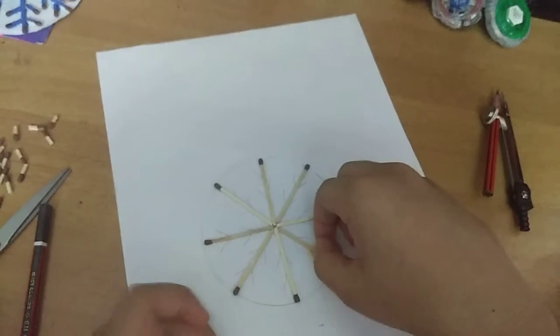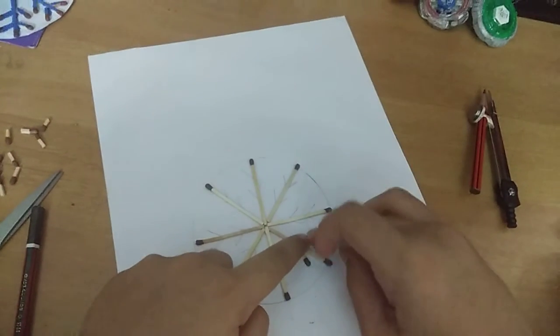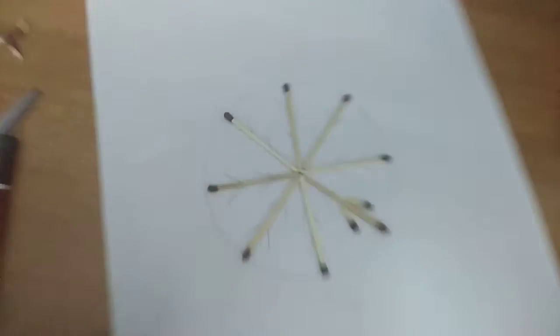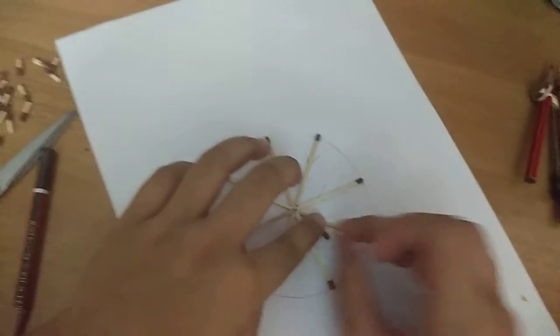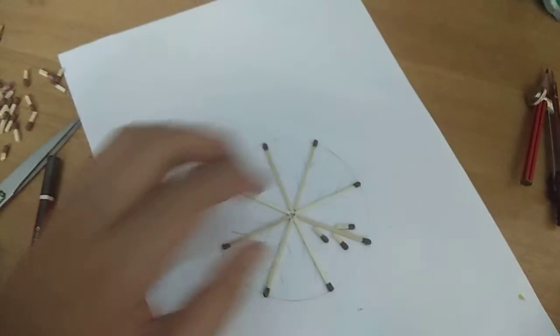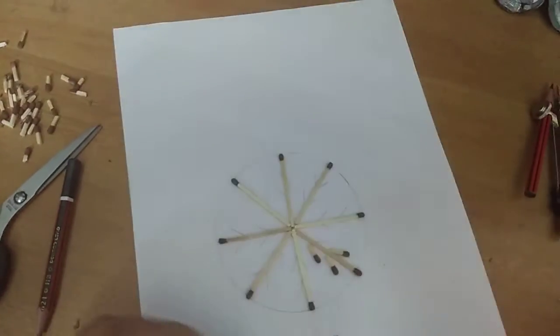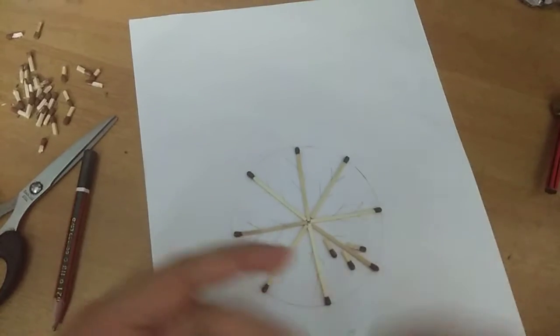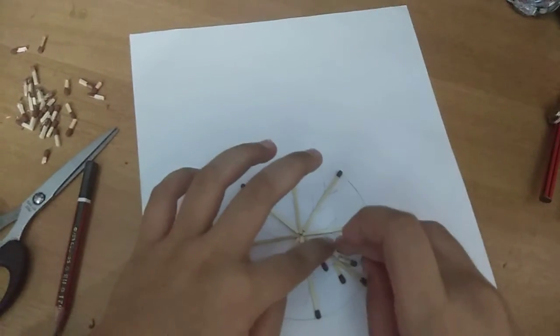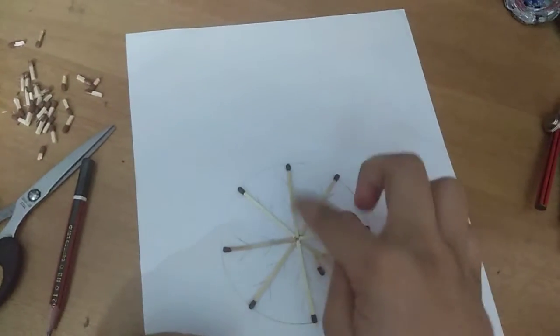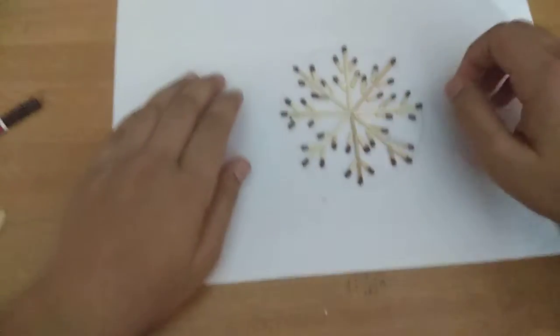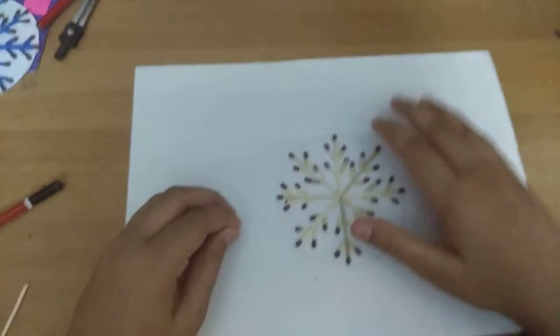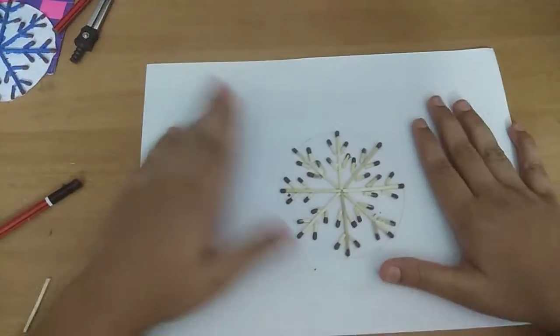Glue this and over here and one more. So now you need to do this all on the six sides. So now I have stuck all the matchsticks over here. You can see it like this on the lines.